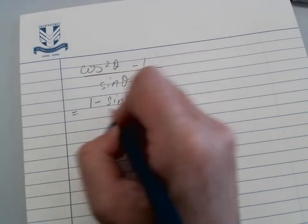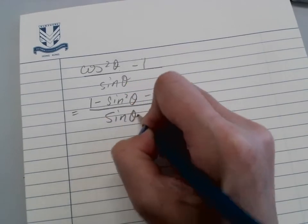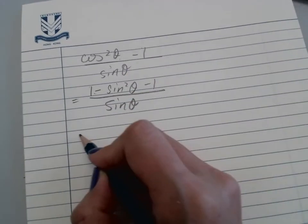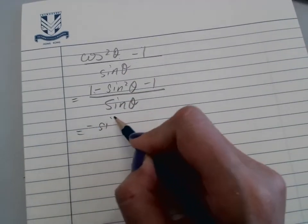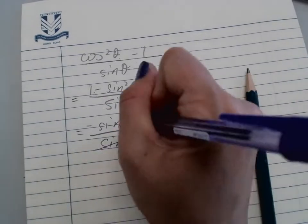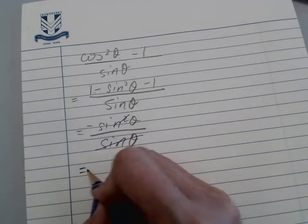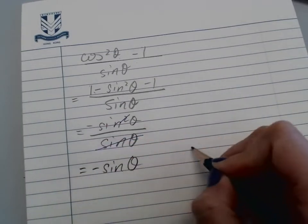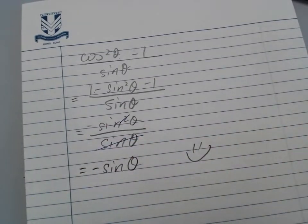1 - 1 = 0, so we have -sin²θ/sin θ. I can cancel one sine from numerator and denominator, giving us -sin θ. And that's how we simplify it.